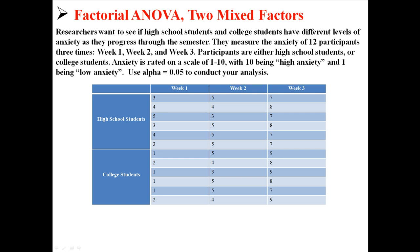We have an independent variable, which is school — high school and college. And we have a dependent variable, which is week: week 1, week 2, week 3. Because we're measuring the same people three times, that makes it a dependent variable, while the other one is independent because they're different people.